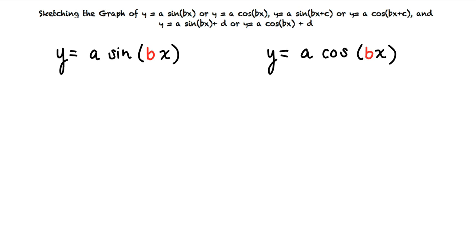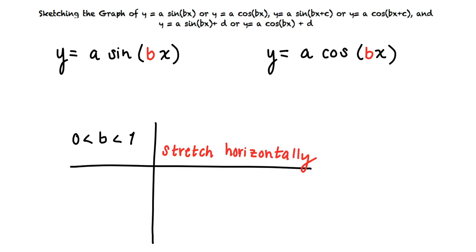Multiplying the angle x by b means we multiply the x-coordinates of the points on the graph by 1 over b. The coefficient b will change the period of the graph according to the rules shown below. If b is greater than 0 but less than 1, then the graph will stretch horizontally, meaning fewer cycles within one period. If b is greater than 1, then the graph will shrink horizontally, meaning more cycles within one period.